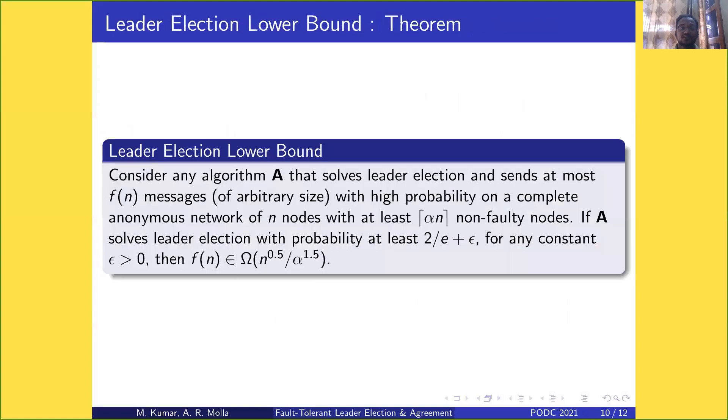Here is the leader election lower bound theorem: any algorithm that solves leader election and sends at most f(n) messages of arbitrary size with high probability on a complete anonymous network of n nodes with at least αn non-faulty nodes—if A solves leader election with constant probability, then f(n) is Ω(n^0.5 / α^1.5).